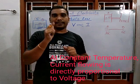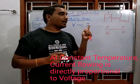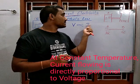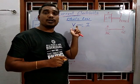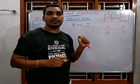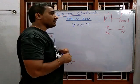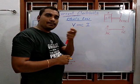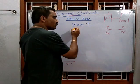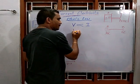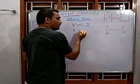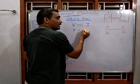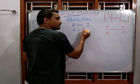Remember: at constant temperature, the current flowing is directly proportional to the potential difference. This is Ohm's Law. To balance this proportionality, we add a constant called resistance.